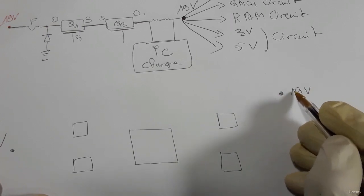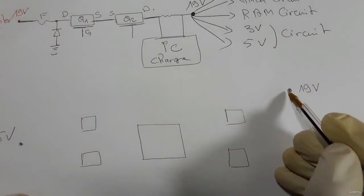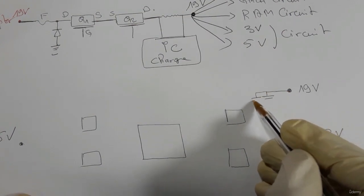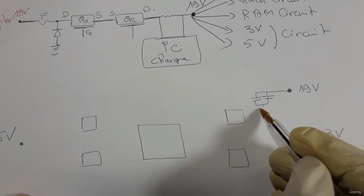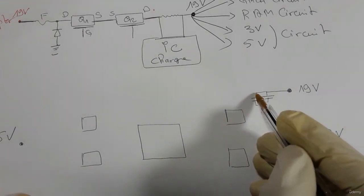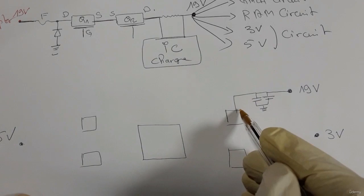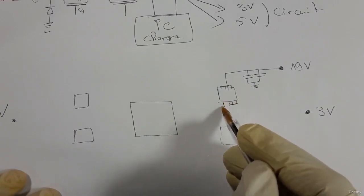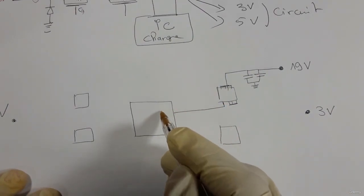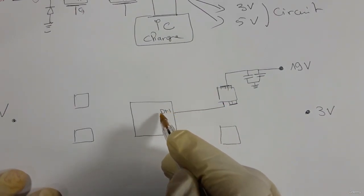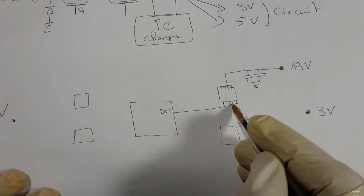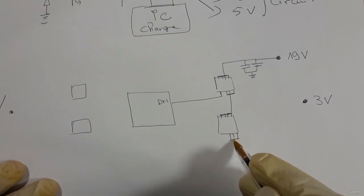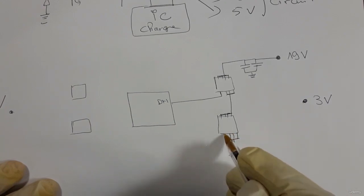For the 3V rail, the 19V main power from the motherboard passes through some capacitors — ceramic capacitors or PF capacitors — and then goes to the drain of the high-side MOSFET. The source of that MOSFET connects down, and the gate is the drive-high signal.